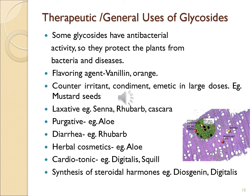Some glycosides are used as laxatives — the best example is senna, then rhubarb and cascara. Some are used as purgatives and are very good for skin, for example aloin. Some glycosides act as antidiarrheal, for example rhubarb. Some are used in herbal cosmetics, for example aloin. Cardiotonic glycosides include digitalis and squill, and a few are used as steroidal hormones, for example diosgenin and digitalis.